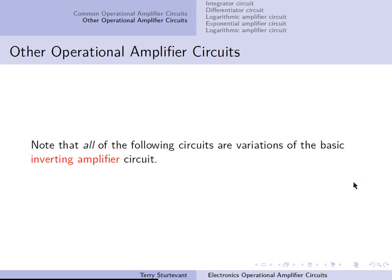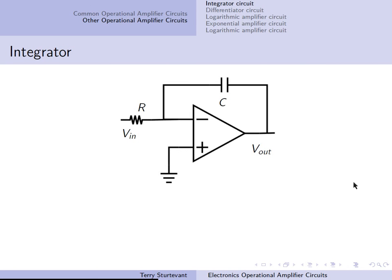All of these circuits that follow are based on the inverting amplifier circuit. Here's the integrator circuit, where we've replaced one of the resistors by a capacitor. The output is the integral of the input over time, so the output equals minus 1 over RC times the integral of VIN DT.